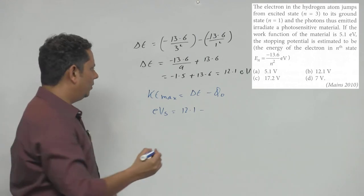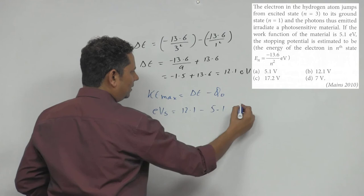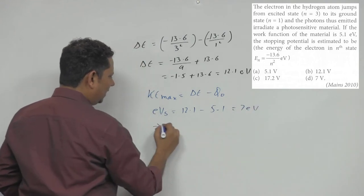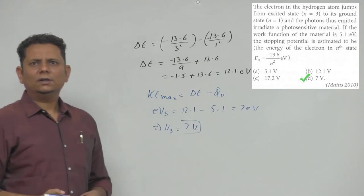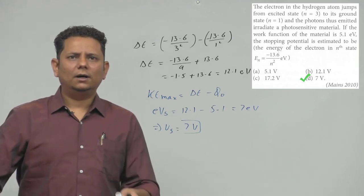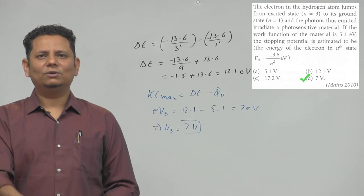So 12.1 minus 5.1 gives 7 electron volts, which implies stopping potential of 7 volts. Based on this, we can say that option D, 7 volts, would be the right answer.